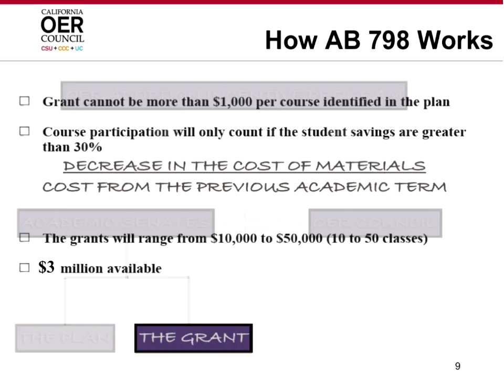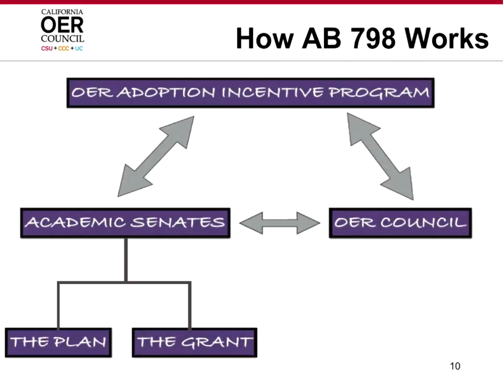When they're talking about the cost of materials, it's basically taking the cost from the previous semester off the bookstore website and using that cost. People ask whether they should take the cost of the textbook from Amazon or other sources — no. When you're comparing it, take it from the bookstore list from the previous semester. That's a really good point, because it's not the cheapest the student can find the text. It's what the cost of the text was at the bookstore the previous term.